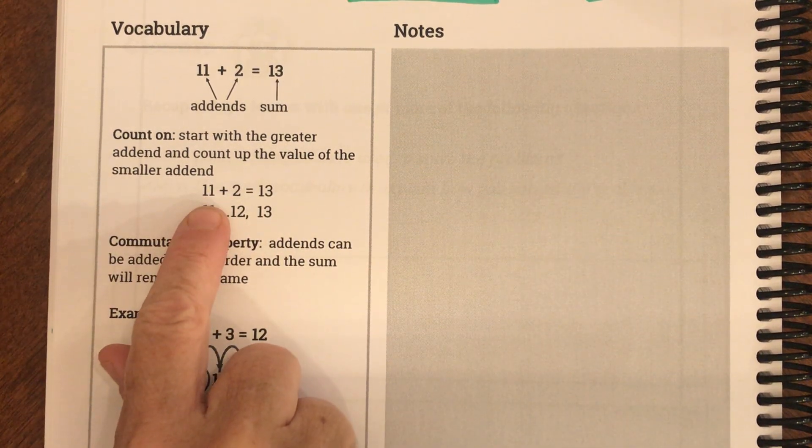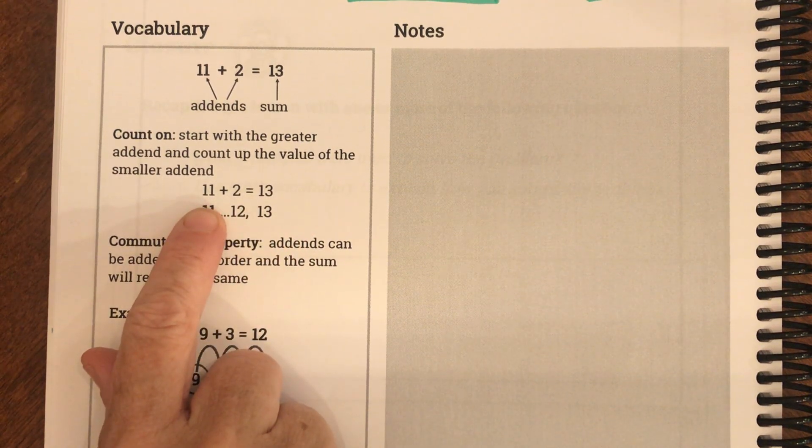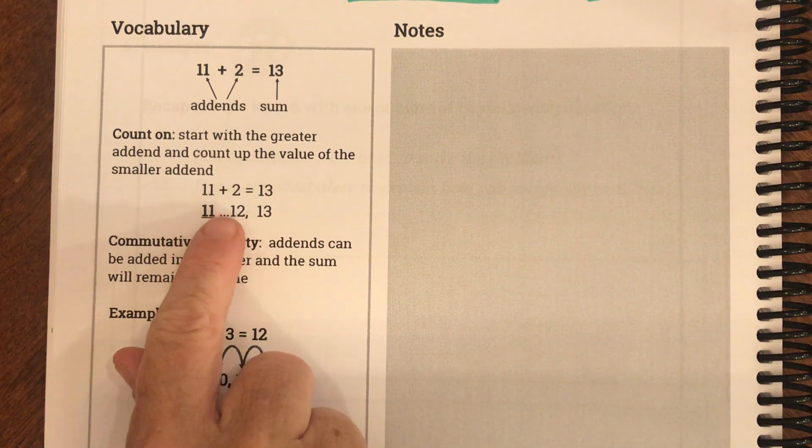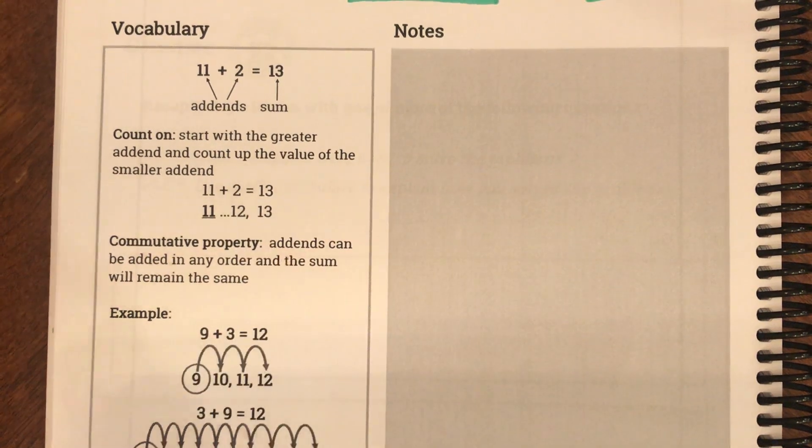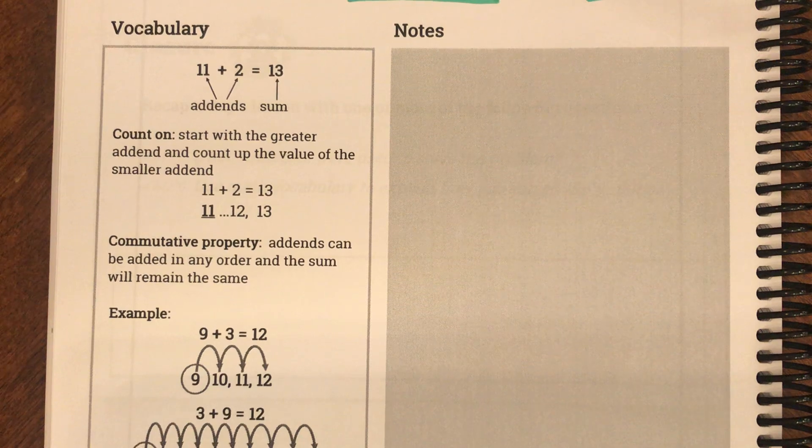It means start with the greater addend and count up the value of the smaller addend. So if I want to do 11 plus 2, I start with 11 and I count up 2 more. So 11, and then if I count up 1 more, I get 12, and I can count up 2 more, I get 13. That's called the count on strategy. So that's what we're going to be doing today.